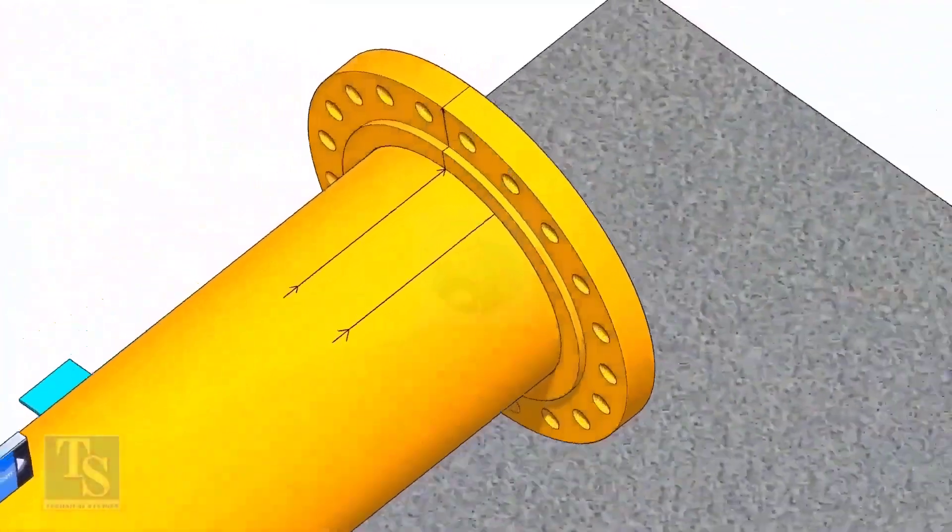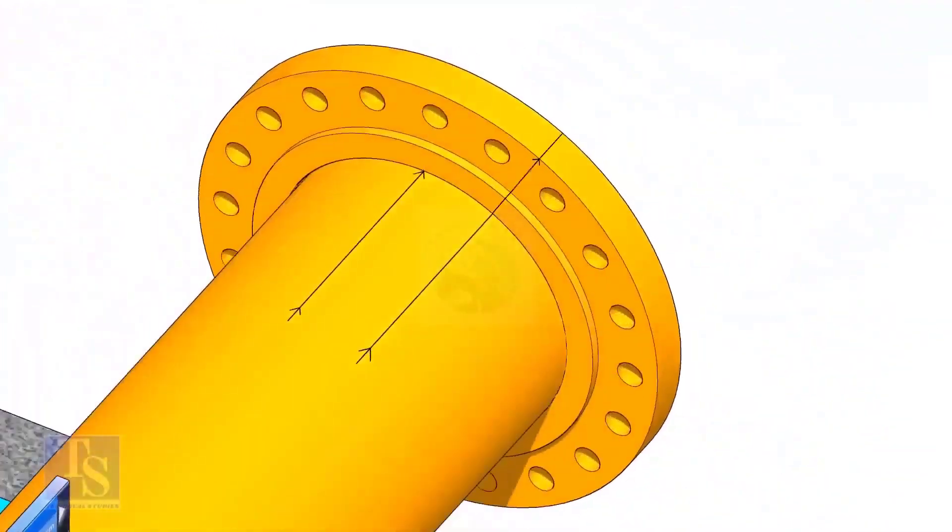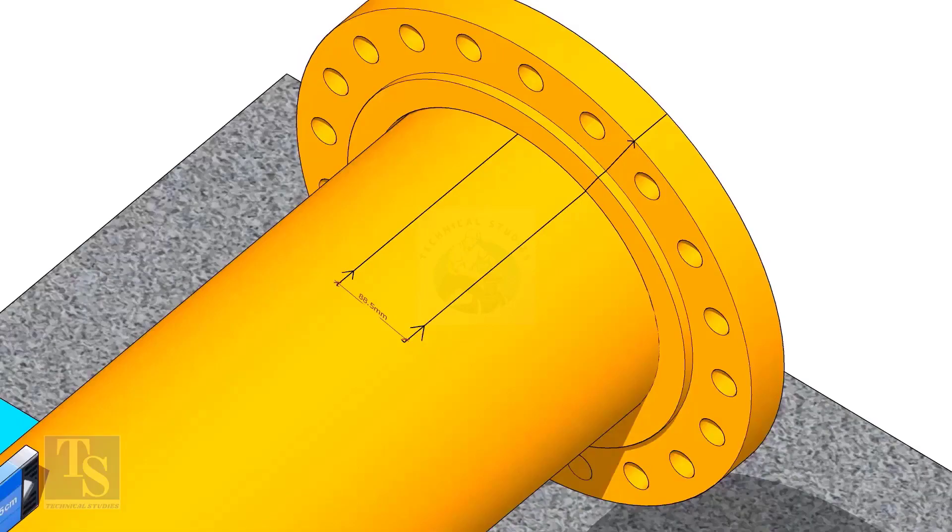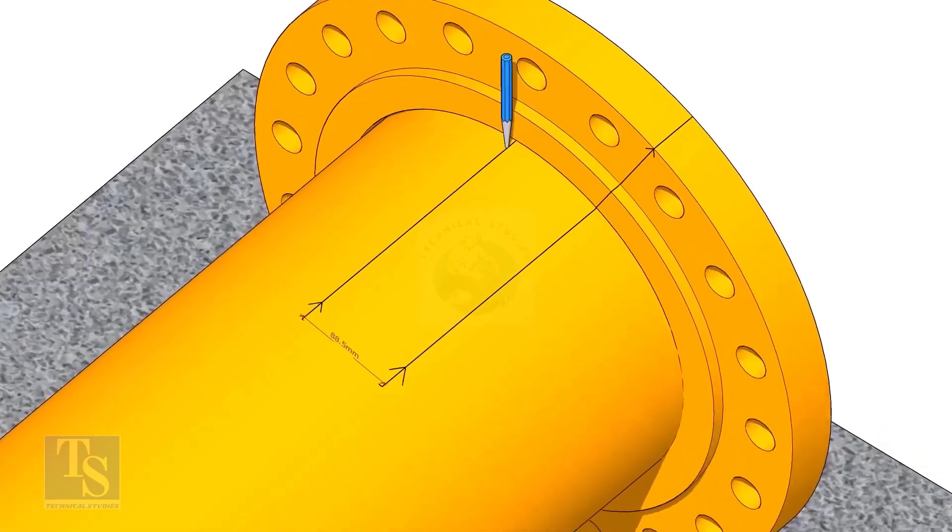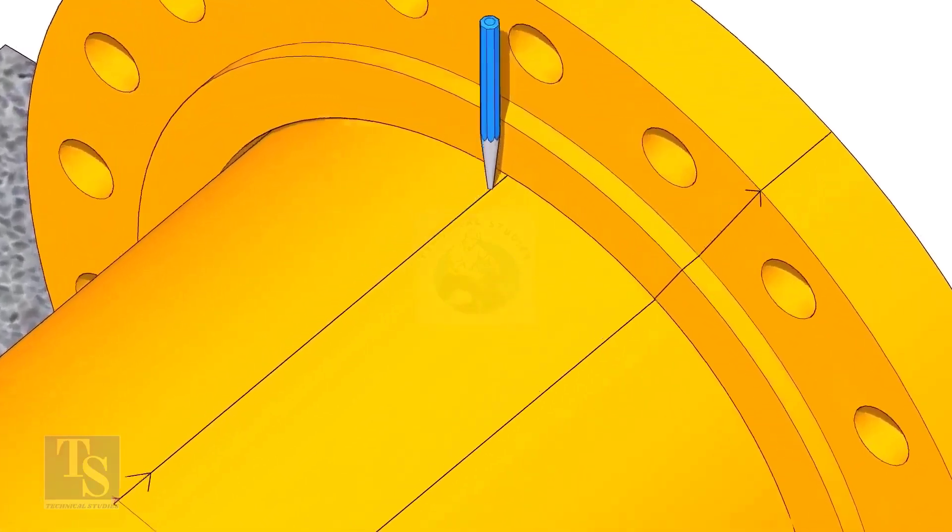Put the flange on the pipe. Rotate the flange until the center line on the flange and the 25 degree line on the pipe come in a line. Don't forget to punch mark the center lines.